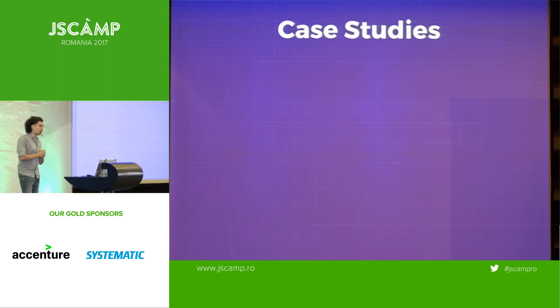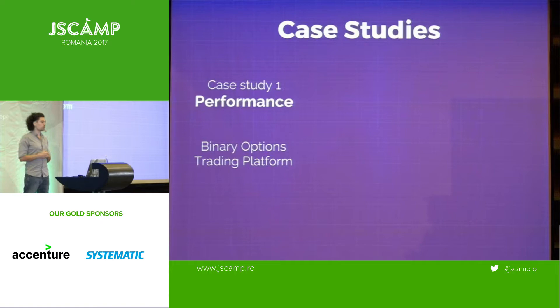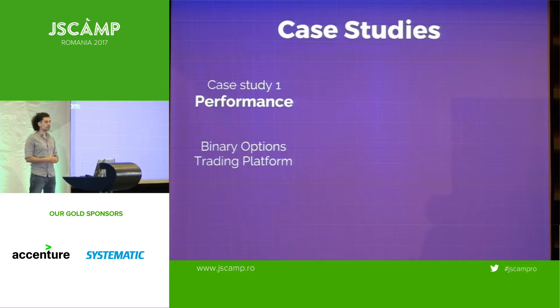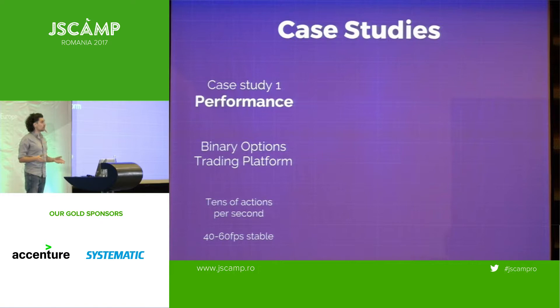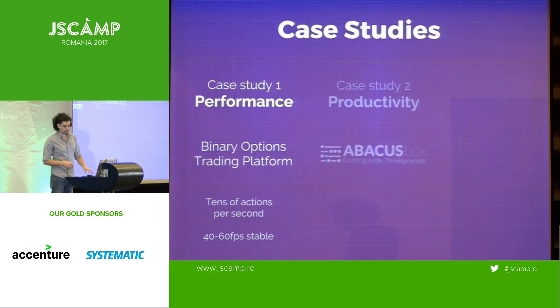I'm going to show some case studies. I've been working on JSON-MVC for over a year now and I've seen it work in many different scenarios. In the binary option trading platform, I had to implement a system with very high throughput — many markets open getting data every single second, tens and hundreds of actions happening every second while the interface must remain responsive. Through this system, you can easily get 40 to 60 frames per second stable, because every computation is decoupled. The UI change is just a render — nothing happening there — and it's in a totally different thread than the other computation.